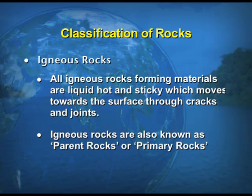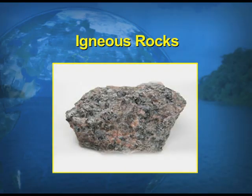Igneous rocks are also known as the parent rocks or the primary rocks. They are the basis of all the other two types of rocks, that is the sedimentary rocks and metamorphic rocks. Igneous rocks are formed through the solidification of the magma. The picture will show you how the magma is found in the interior of the earth and, when it comes out on the surface of the earth, how it forms different features.